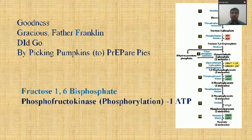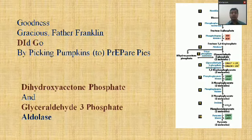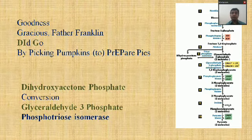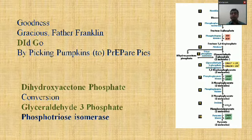Then the splitting phase: 'Did' (D) and 'Go' (G) — reaction four produces two three-carbon molecules: dihydroxyacetone phosphate and glyceraldehyde-3-phosphate, catalyzed by the enzyme aldolase. Reaction five ('By') is the conversion of dihydroxyacetone phosphate to glyceraldehyde-3-phosphate, catalyzed by the enzyme phosphotriose isomerase. At the end of the splitting phase we have two molecules of glyceraldehyde-3-phosphate.